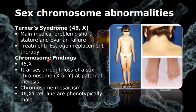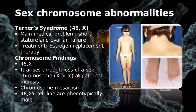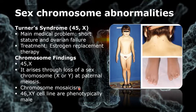For chromosome findings in Turner syndrome, the most common finding is 45 X. In 80 percent of cases, it arises through loss of a sex chromosome at paternal meiosis. There is also chromosome mosaicism, and those with a normal cell line have a chance of being fertile. Some cases have 46 XY cell lines but are phenotypically female.